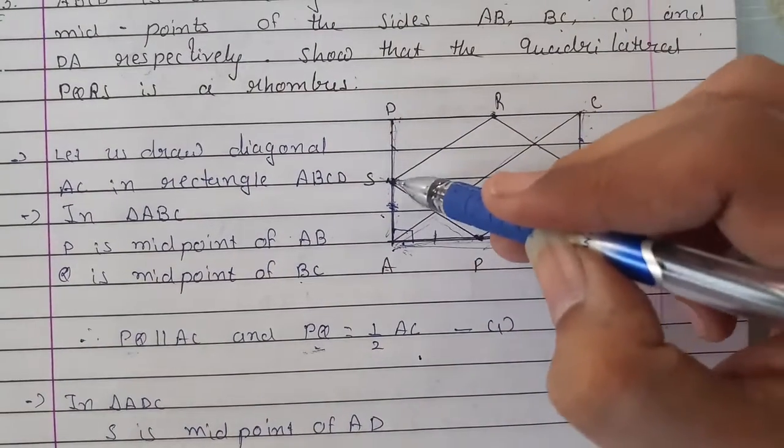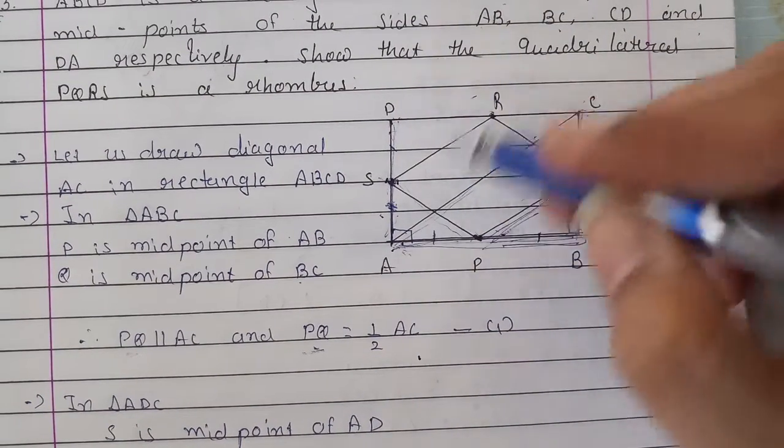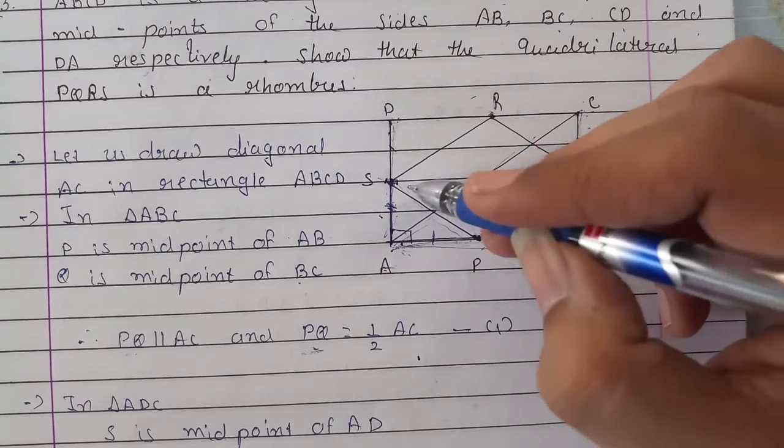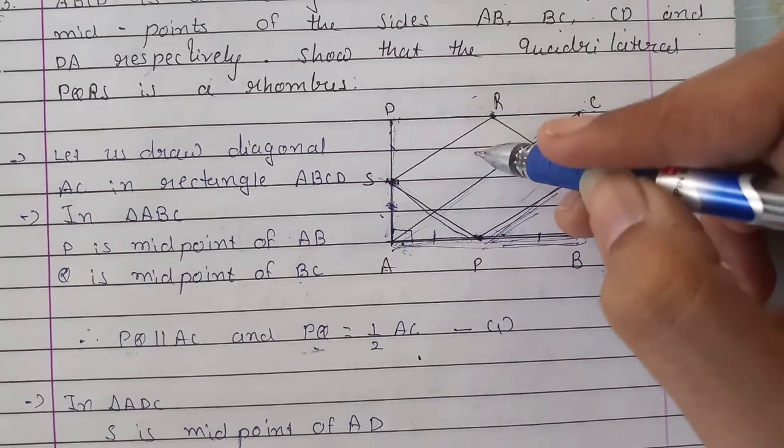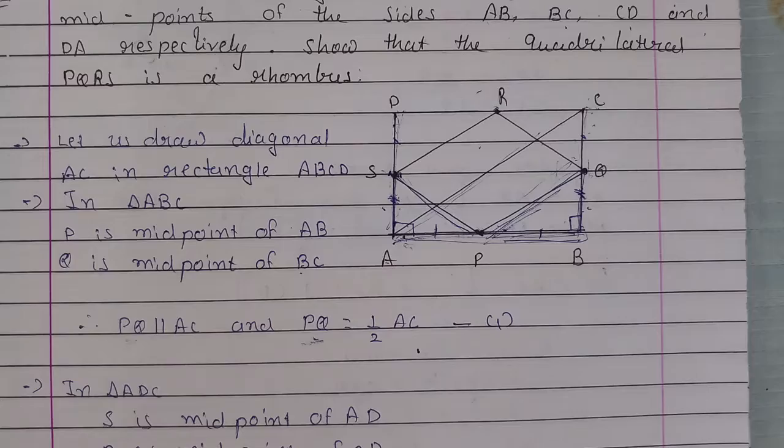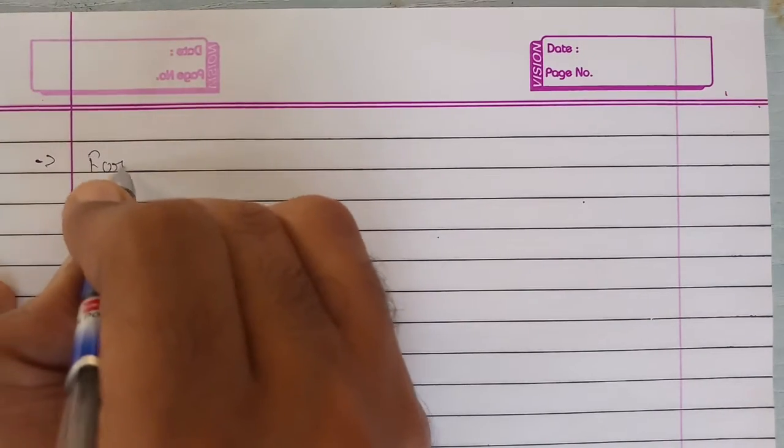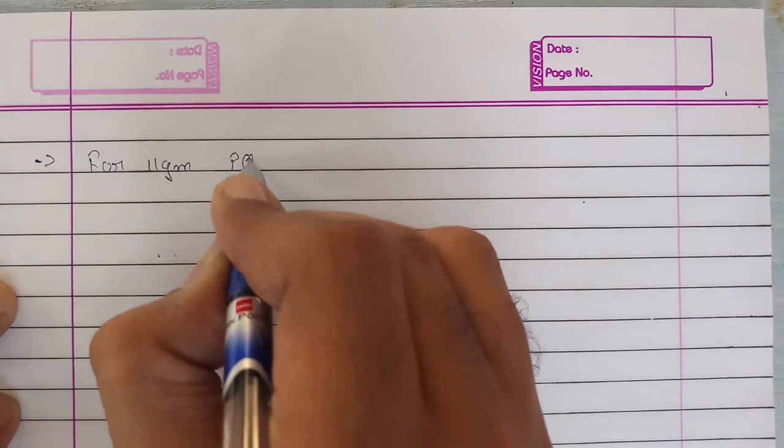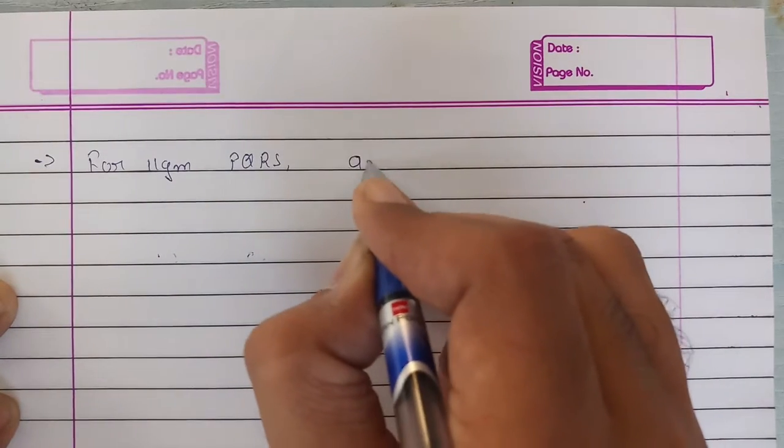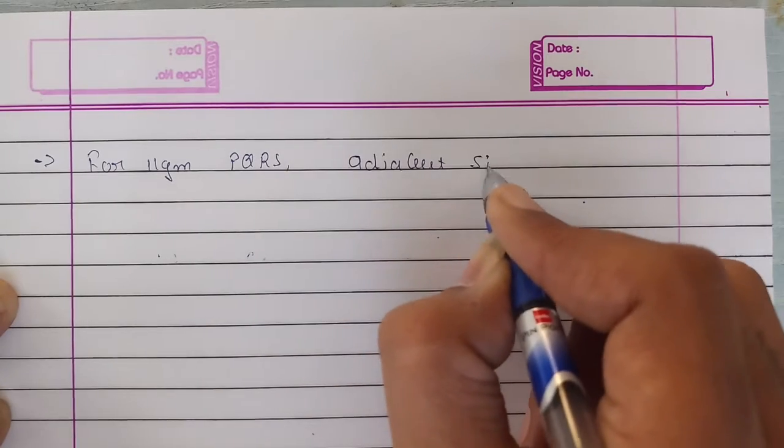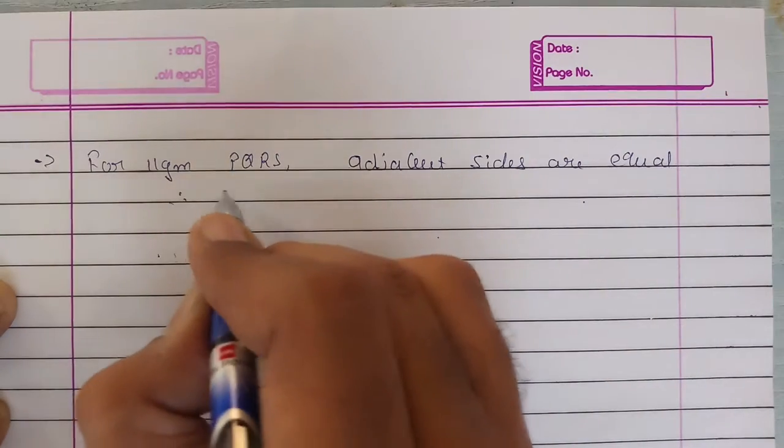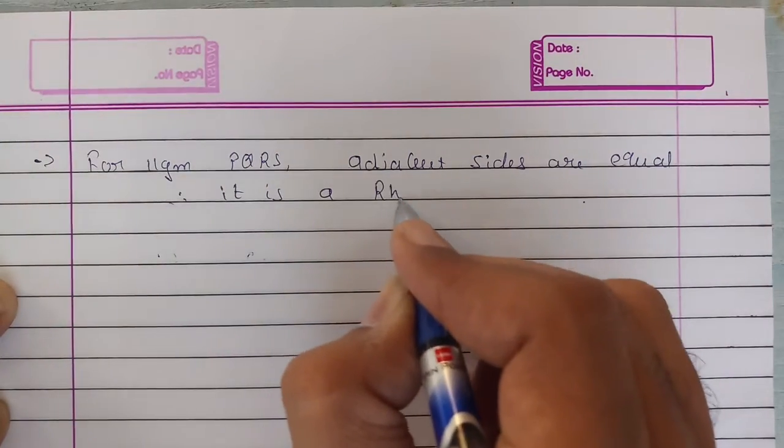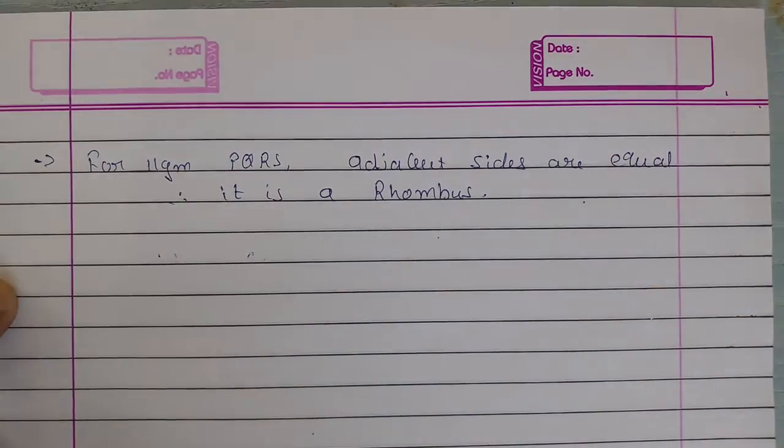Now observe this. PQRS parallelogram we have already proved it. And now we have also proved PS equals PQ. So this means this will become a rhombus. For parallelogram PQRS, adjacent sides are equal. Therefore, it is a rhombus.